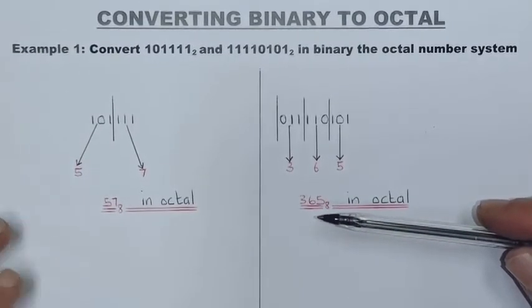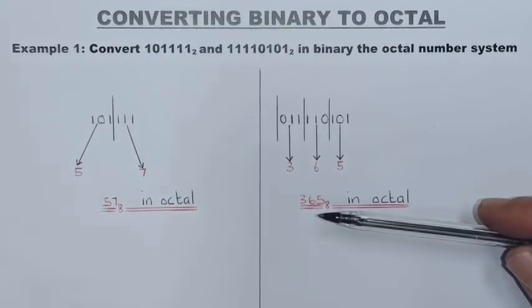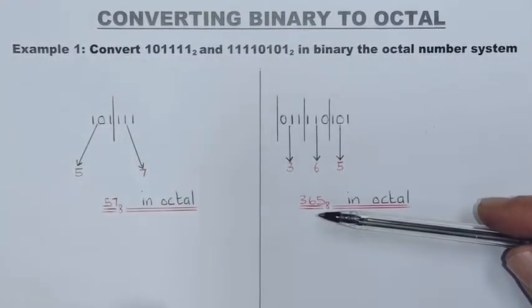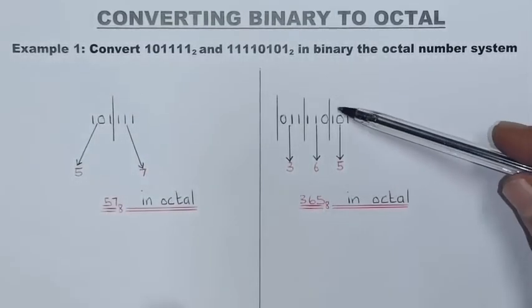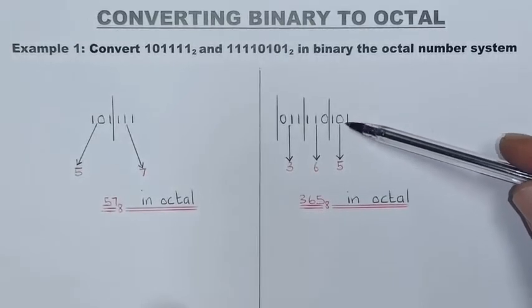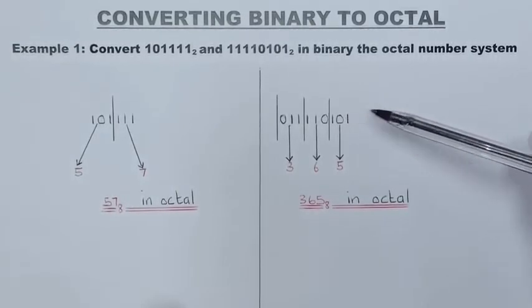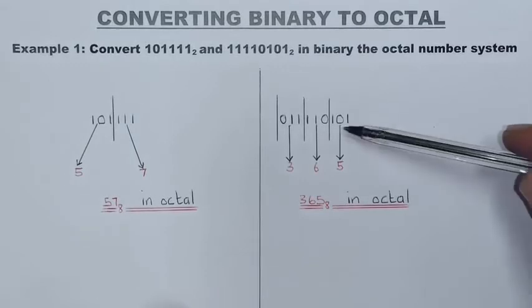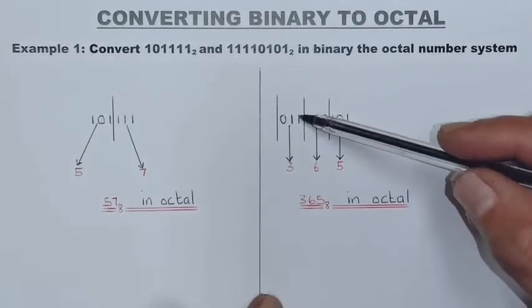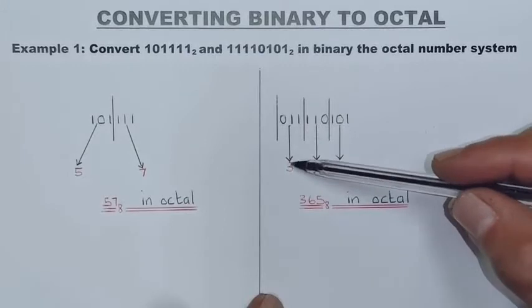Now again students, don't write the number or make the groups from your starting from your right inside going to the right. Always start grouping your binary groups of three digits starting from your right going to the left.